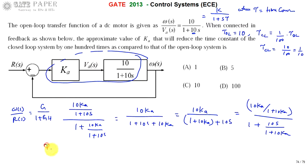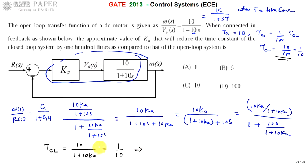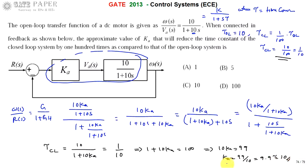From this expression, τ_closed_loop equals 10 divided by (1 + 10·Ka). We already know τ_closed_loop equals 1/10, so setting 10/(1 + 10·Ka) = 1/10 and cross-multiplying gives 1 + 10·Ka = 100, so 10·Ka = 99, and Ka = 99/10 = 9.9, which is approximately 10. Therefore the value of Ka that reduces the closed-loop time constant by 100 times is Ka = 10, and the correct answer is option C.